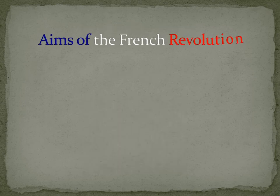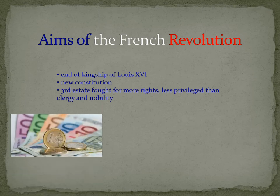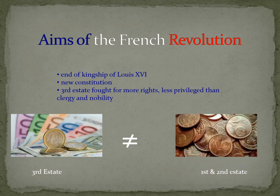The French Revolution aimed at ending the kingship of Louis XVI. France had spent too much money on the American independence war, which led to a financial crisis. Furthermore, the Third Estate — peasants and craftsmen, for example — had to pay more taxes and were less privileged than the clergy and the nobility. Thus, they wanted a change.